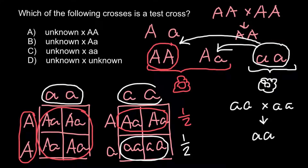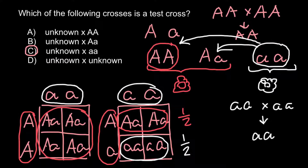In a test cross, one parent is of known phenotype and genotype. We cross it with another parent of known phenotype but unknown genotype. Just by looking at the F1 generation, we can say whether the plant of unknown genotype is true breeding or not. So the correct answer would be answer C — we cross the unknown genotype with the known genotype.